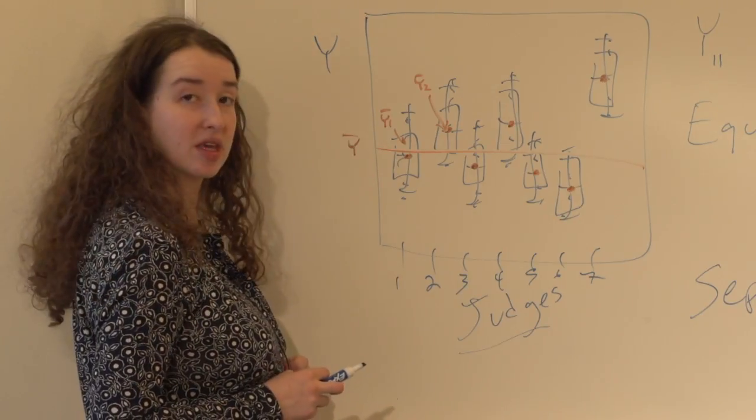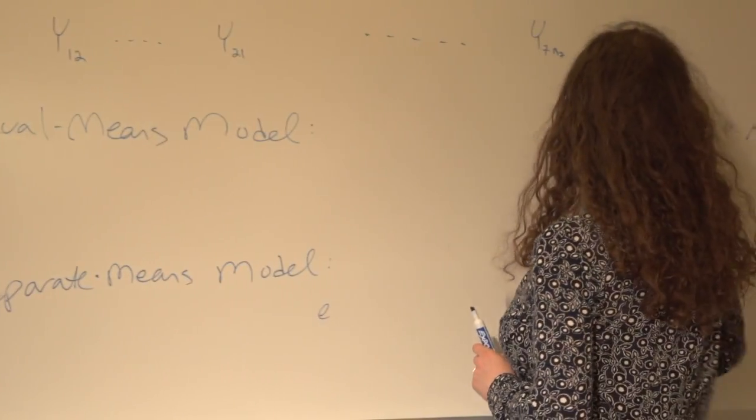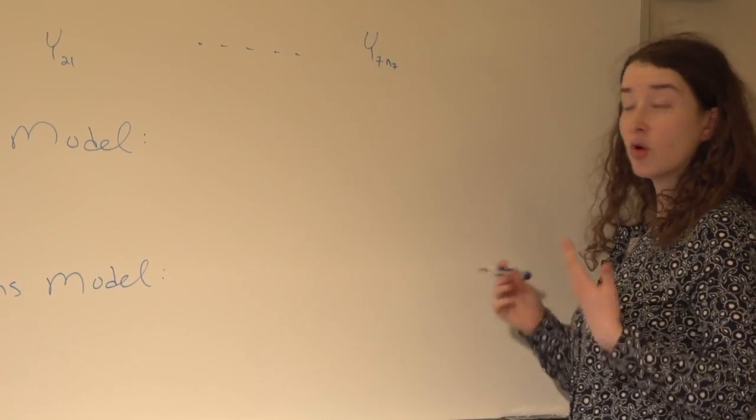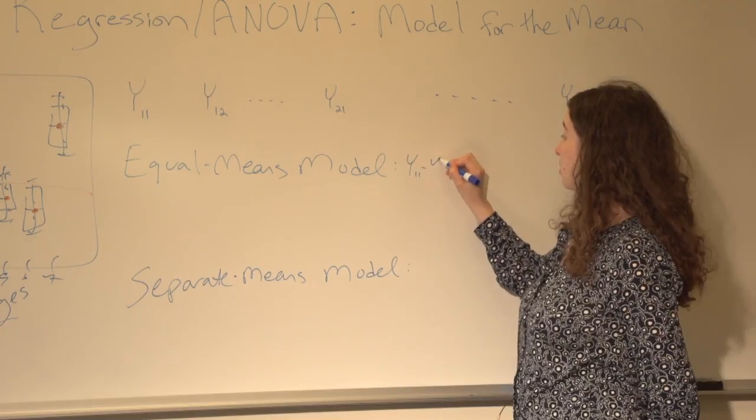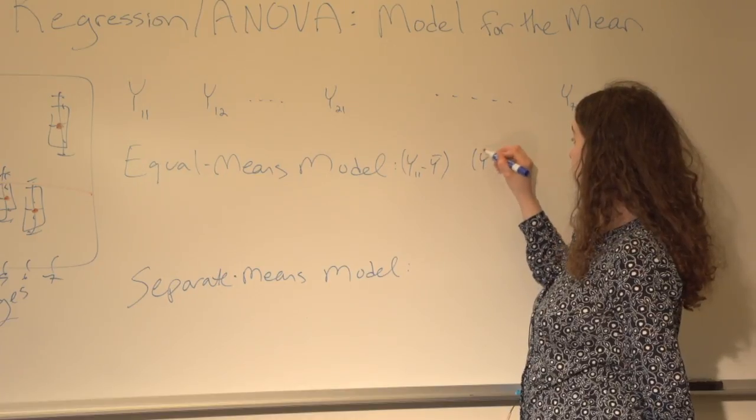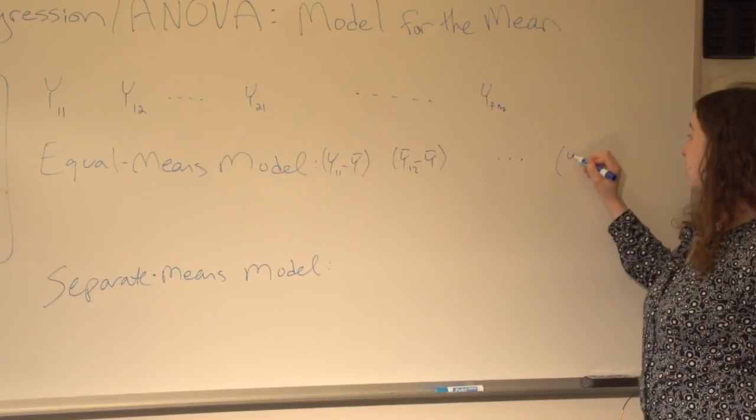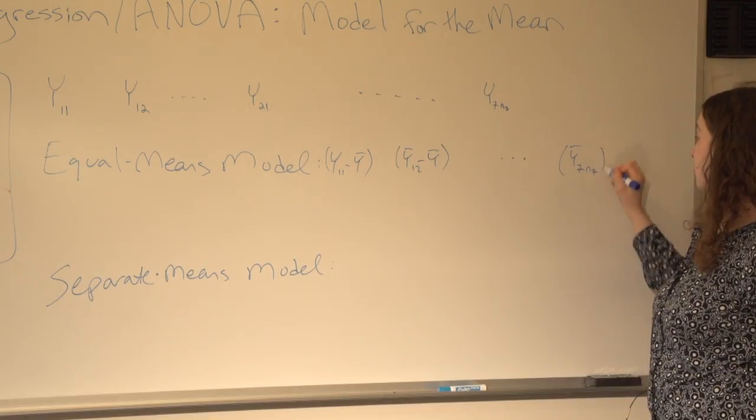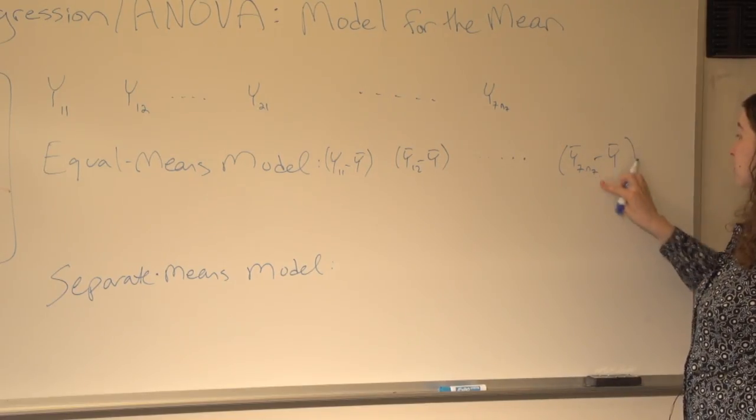So if I want to assess whether the equal means model is appropriate, I'm going to take each data point and subtract my estimate of the overall mean from that data point. So I'm going to take y 1 1 minus y bar, the overall mean of all the values. I'm going to take y 1 2 minus y bar, the mean of all the values, etc. All the way up to y 7, and then this n 7 is the sample size in the 7th group. All the way up to the last value in the 7th group minus the overall sample mean.